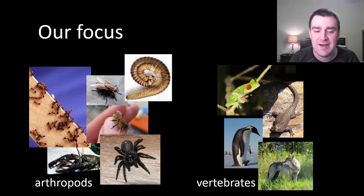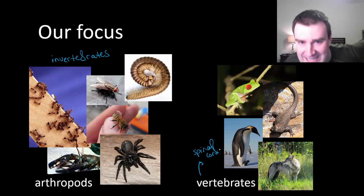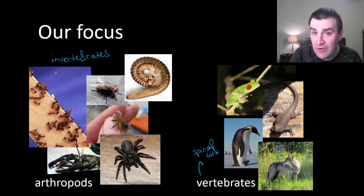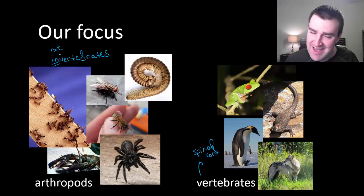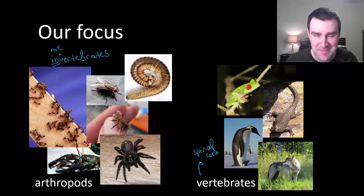Arthropods and all the other groups I covered are considered invertebrates, while the vertebrates form the other major group. A vertebrate means you have a spinal cord — that rigid rod you can feel along your back. Frogs, lizards, penguins, wolves, and us — we are all vertebrates. All other animal groups are invertebrate, meaning without a spinal cord. Technically our phylum name is chordates, but just about all vertebrates are chordates, so that's the group we'll focus on.